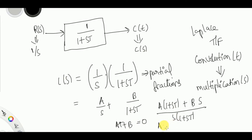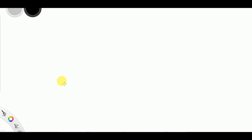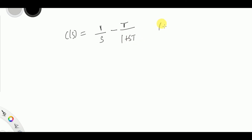And A equals 1, because the coefficient of the constant term is only A, and the constant in the numerator is 1. So A = 1. Substituting back, you get B = −T. Now substituting these two values back into the equation, C(s) becomes 1/s minus T/(1+sT), since A = 1 and B = −T.